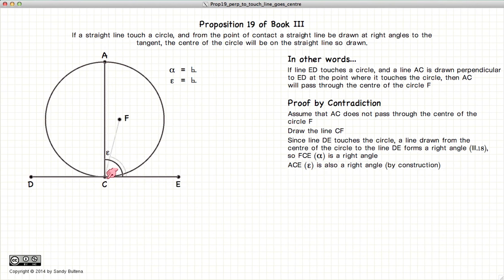But we've already said that ACE, or epsilon, is also a right angle by construction. So if these two are both equal to a right angle, then they are equal to each other. So epsilon equals alpha.